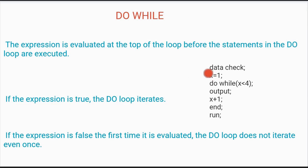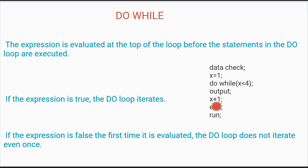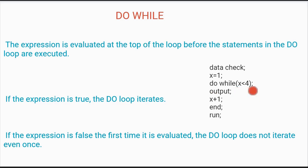Here I have one example. Data, dataset name. The value of x is one. DO WHILE expression is x is smaller than four. So first it will evaluate the expression: is one smaller than four? Yes. Then it will execute the statement: one plus one is two. Now is two smaller than four? Yes. Then two plus one is three — is three smaller than four? Yes, so it is still true and it will iterate again. Now three plus one is four — is four smaller than four? No, four is equal to four. So now this expression became false and it will stop iterating.